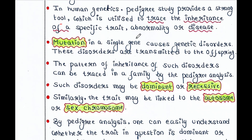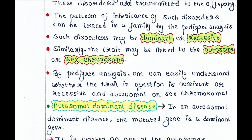Mutation in a single gene causes genetic disorders. Different types of genetic disorders we have seen. These disorders are transmitted to the offspring from their parents. The pattern of inheritance of such disorders can be traced in a family by pedigree analysis. Such disorders may be dominant or recessive. Similarly, the trait may be linked to the autosome or sex chromosome. By pedigree analysis, one can easily understand whether the trait is dominant or recessive and autosomal or sex-chromosomal.